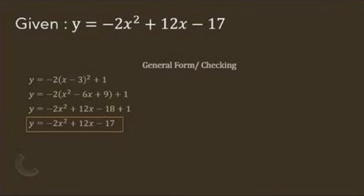Then we have to combine like terms, which will become negative 17, and then it'll become y equals negative 2x squared plus 12x minus 17.